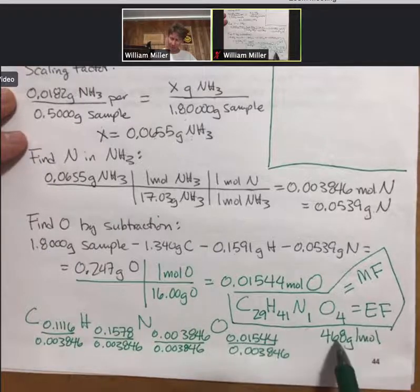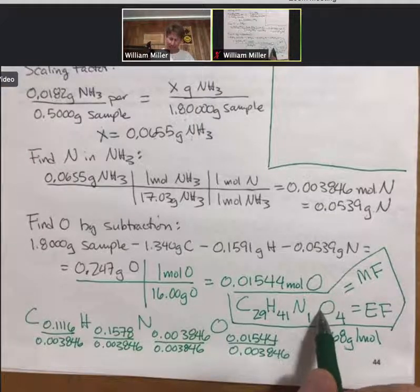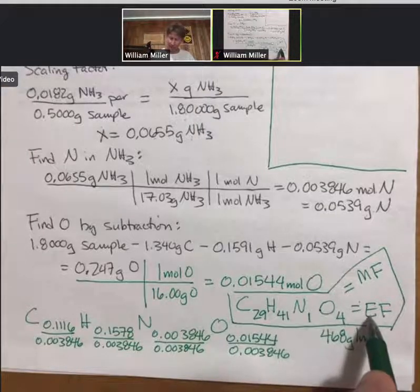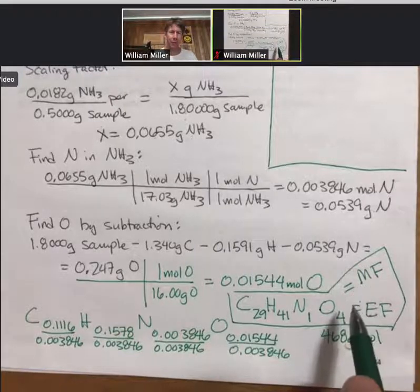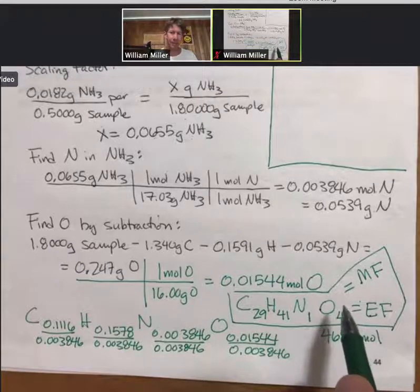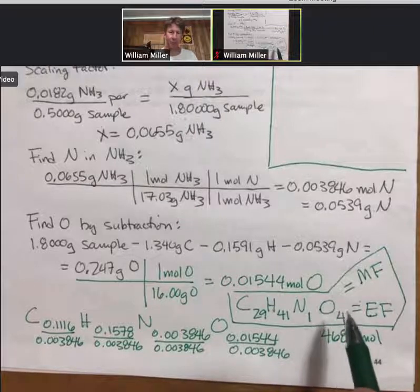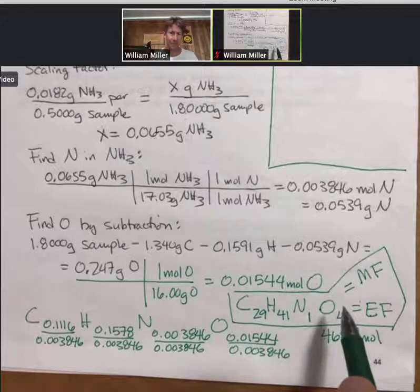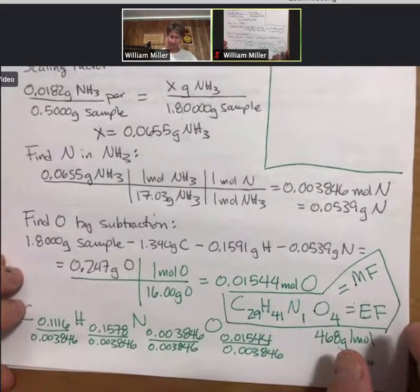Find the molar mass of the empirical formula. If it's the same, then the empirical formula is the molecular formula. If it were different, then we have to figure things out. And in the next example I'm about to do, they're different, so we have to figure it out. So I'm happy to show you that process.